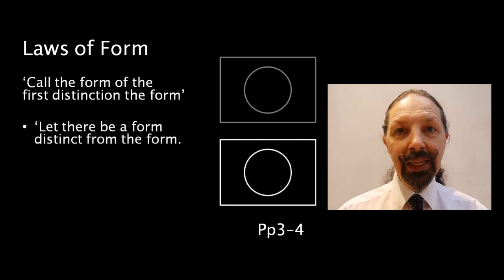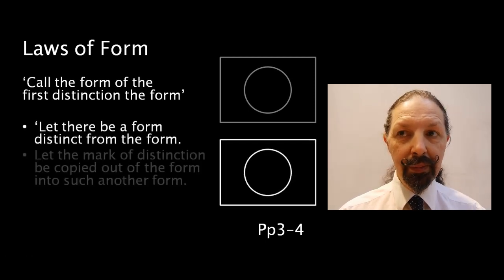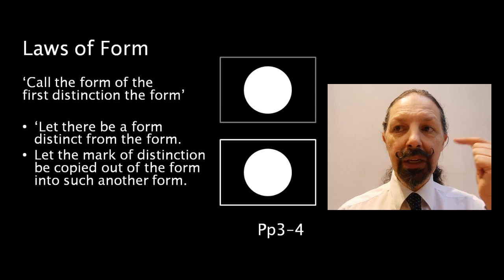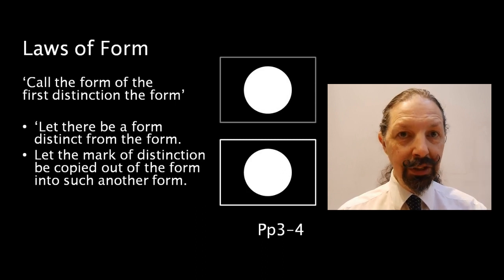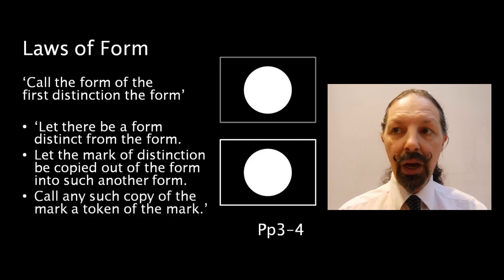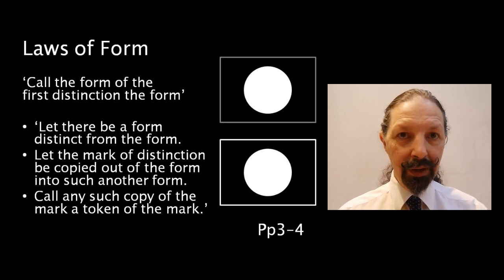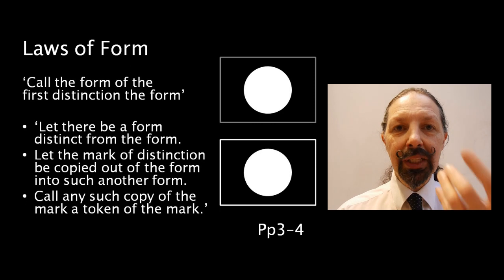Let there be a form distinct from the form. Let the mark of distinction be copied out of the form into such another form. Call any such copy of the mark a token of the mark. So here we're introducing the term token.